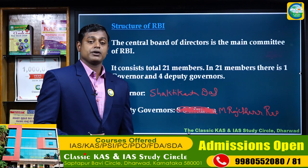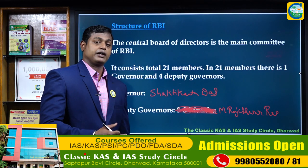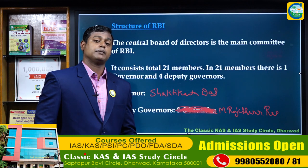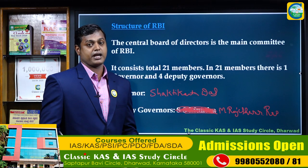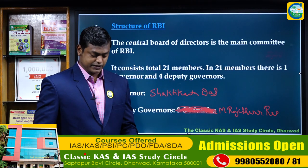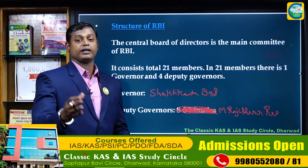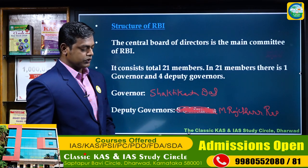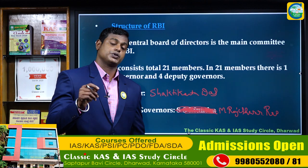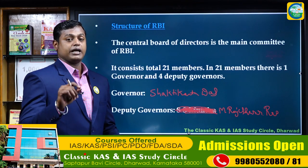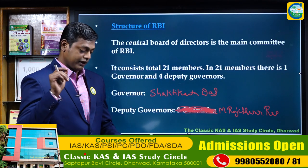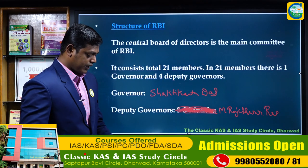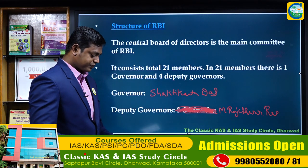RBI also acted as a central bank for different countries — Burma (now Myanmar) and Pakistan. It acted as central bank for Myanmar until 1948 and for Pakistan until 1947.